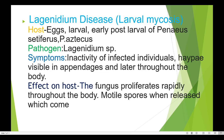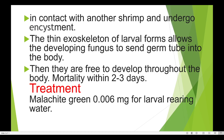Lagenidium disease: the host includes larvae, eggs, and post-larvae of Penaeus setiferus and Penaeus estuarius. Symptoms include inactivity of infected individuals. Hyphae are first visible in the appendices and later throughout the body. The fungus proliferates rapidly throughout the body, and motile spores, when released, come in contact with the host and cause encystment.